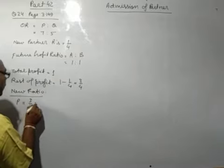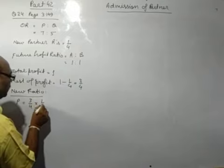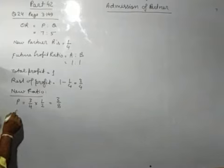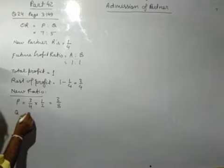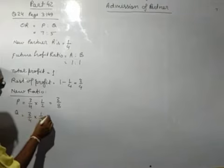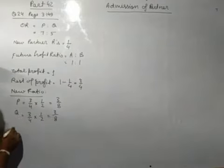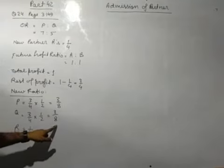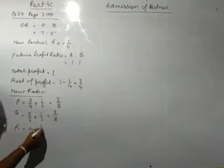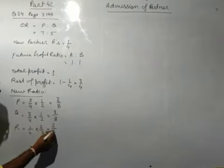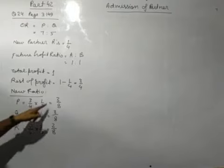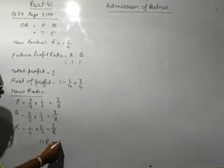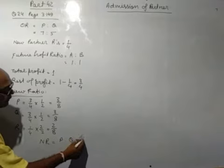And new ratio, P: 3 by 4 into future ratio 1 by 2 that is 3 by 8, and Q: 3 by 4 into 1 by 2 that is 3 by 8, and R is 2 by 8. So new ratio has come P is to Q is to R that is 3 is to 3 is to 2.